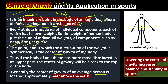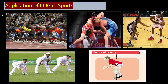Generally, the center of gravity of an average person is located approximately above the waist. In sports, lowering the center of gravity increases balance and stability. The lower the center of gravity point, the more balance and stability the athlete has. So if someone asks you what the center of gravity is: it is an imaginary point where forces are balanced, influenced by mass, and lowering it improves stability.